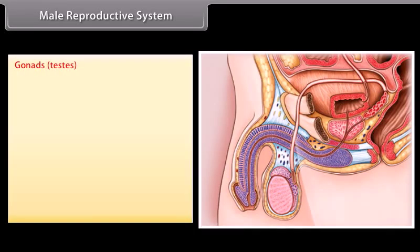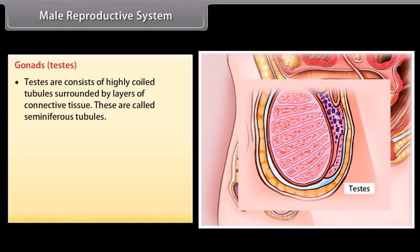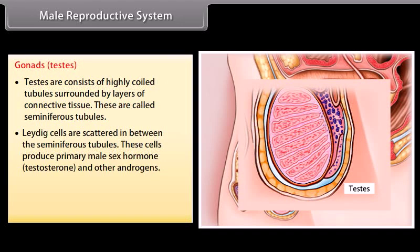The testes consist of highly coiled tubules surrounded by layers of connective tissue, called seminiferous tubules. Leydig cells are scattered in between the seminiferous tubules. These cells produce the primary male sex hormone testosterone and other androgens. Sperms are produced in the seminiferous tubules.